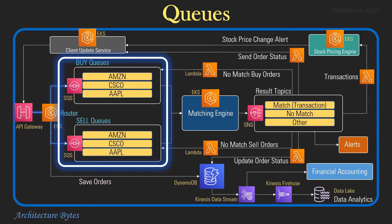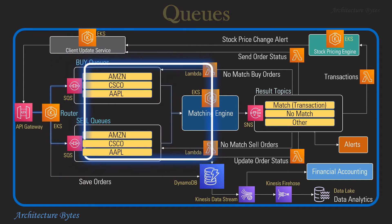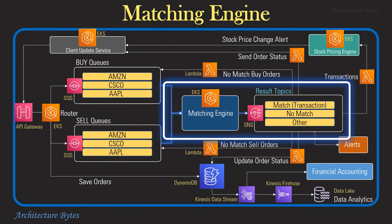Every stock has two queues — a buy queue and a sell queue. Incoming orders are placed accordingly in these queues. So if a buy order for Amazon stock is received, it goes to the Amazon buy queue, while a sell order for Amazon stock would be placed in the Amazon sell queue. Once the orders are in queues, the matching engine comes into play.